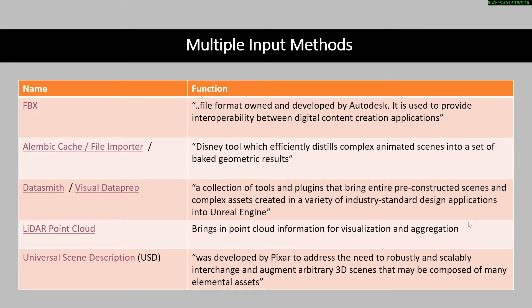Let's move on to multiple input methods. There are a growing number of methods for bringing assets into Unreal, and a lot of them are specialized use case scenarios. However, the most important one for this course, which has a wide range of applications, is the FBX format, which was developed by Autodesk and has the ability to carry a lot of additional data and functionality. Other ones reviewed in later courses will be the Alembic cache, the Datasmith, which can be used to bring entire pre-constructed scenes into the engine, the LiDAR point cloud plugin, which can bring in huge amounts of visual information efficiently. Finally, as we move into the future, I see a greater need for the USD universal scene description interchange format for sharing large amounts of information between applications.